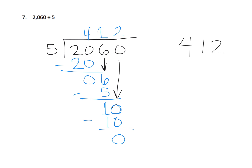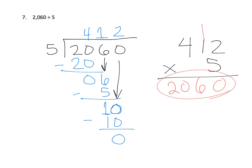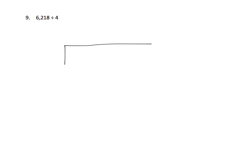To check: 412 multiplied by 5. Five times two is ten, carry the one; five times one is five plus one is six; five times four is twenty — I get exactly 2060, what I was aiming for. That tells me our answer of 412 is correct.